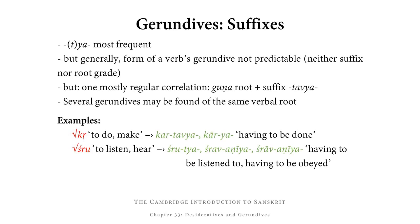Furthermore, we actually find several gerundives formed from the same verbal root in a number of cases. So, for example, from kṛ (to do, to make), we find the gerundives kartavya and kārya, both meaning having to be done. And from śru (to listen or to hear), we find śrutya, śravaṇīya, and śrāvaṇīya, all of which mean having to be listened to or having to be obeyed.